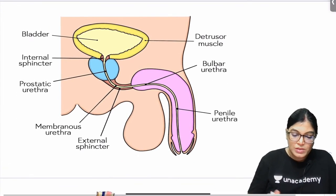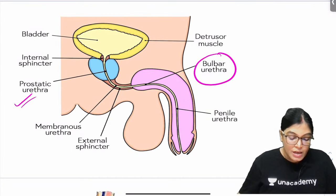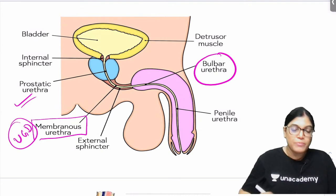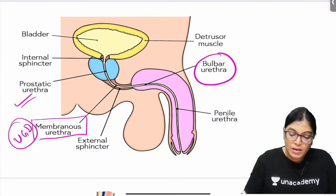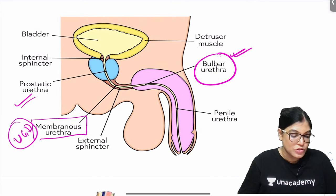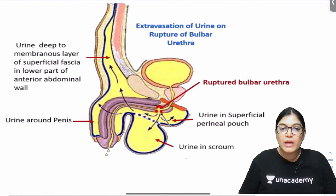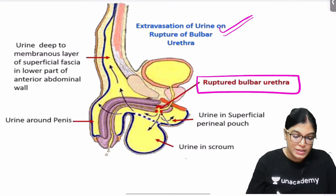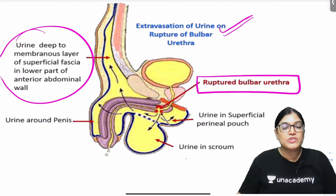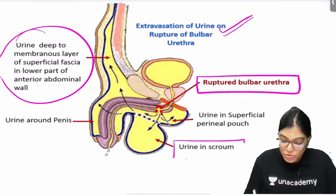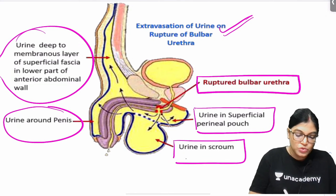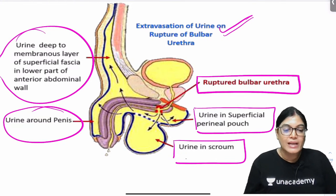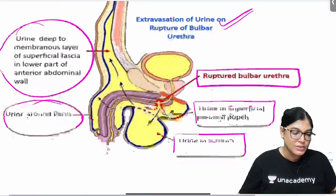Here you can see the locations of the urethra: prostatic urethra passes through the prostate, membranous urethra passes through the urogenital diaphragm, and below that is the bulbar urethra - the part passing in the bulb of the penis and the most commonly injured site. This diagram shows the extravasation of urine with ruptured bulbar urethra: urine passes deep to the membranous layer, accumulates in the scrotum, superficial perineal pouch, and penis - matching all features in the question.